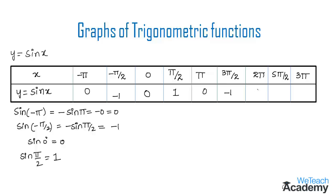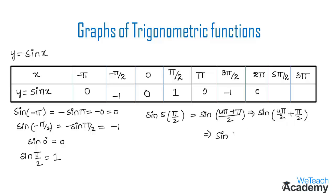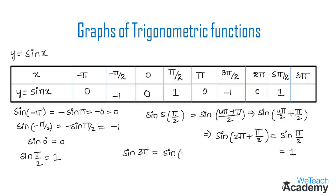For x = 2π (360°): sin(360°) = 0, so y = 0. For x = 5π/2: sin(5π/2) = sin(4π/2 + π/2) = sin(2π + π/2), which is in the form sin(360° + θ) = sin θ, giving sin(π/2) = 1, so y = 1. For x = 3π: sin(3π) = sin(2π + π), again in the form sin(360° + θ) = sin θ, giving sin(π) = 0, so y = 0.